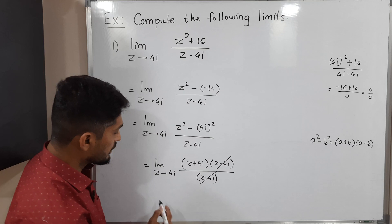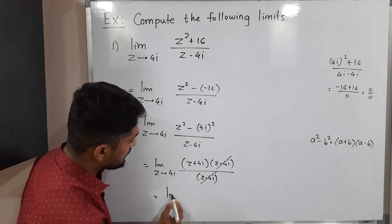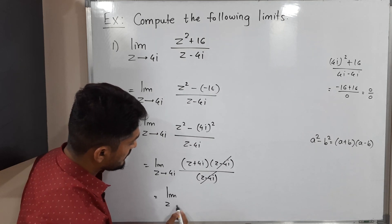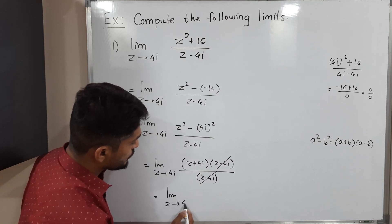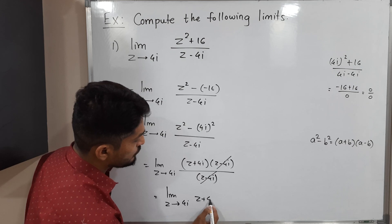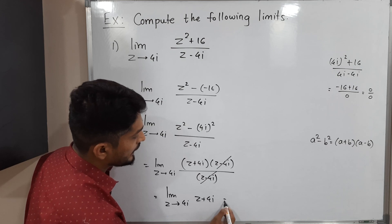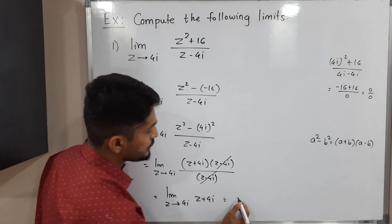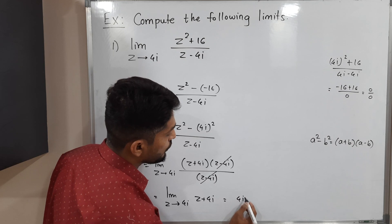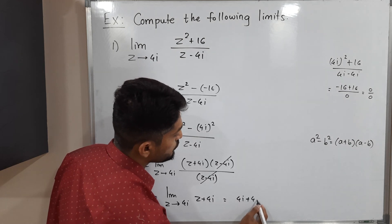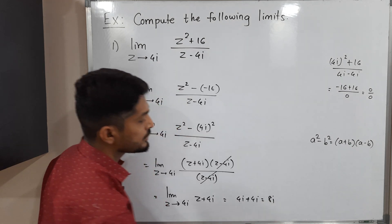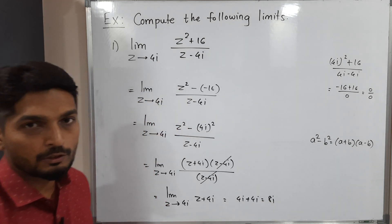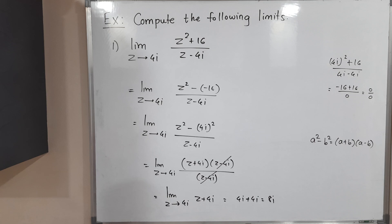After cancelling, we have the limit as z tends to 4i of (z + 4i). Now we can easily put z = 4i, giving 4i + 4i = 8i. So the value of this limit is 8i.